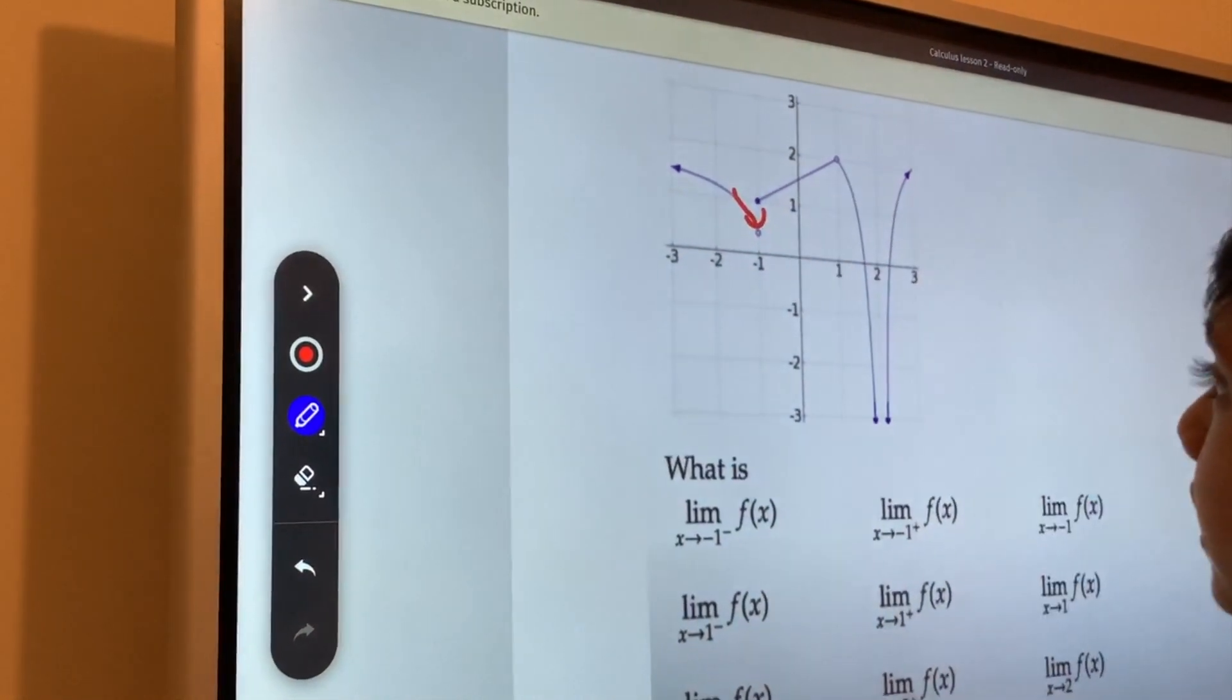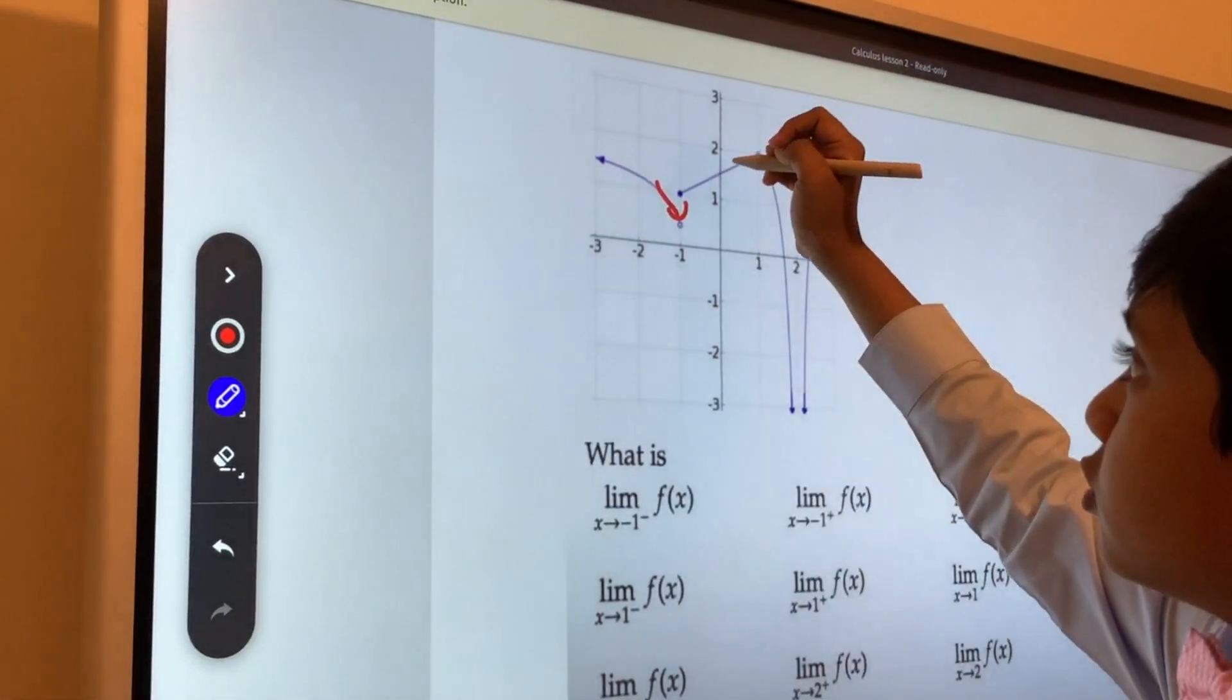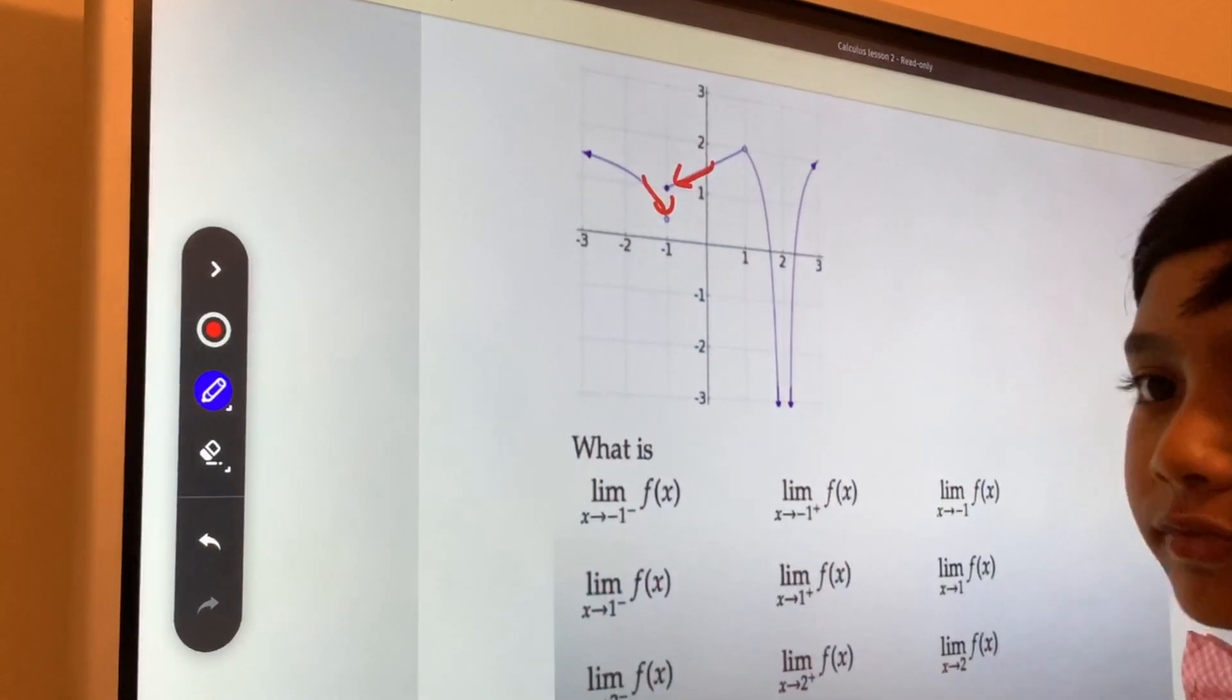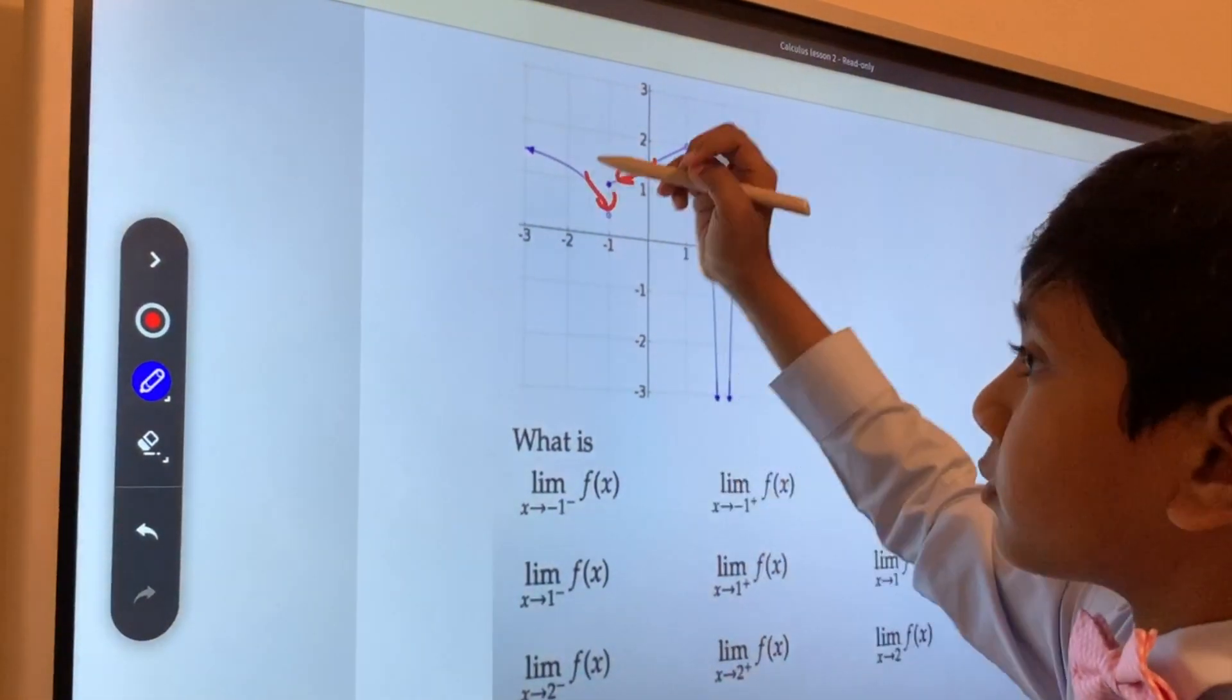It's the obvious, the limit here isn't equal to the limit there. The limit from the left isn't equal to the limit from the right.